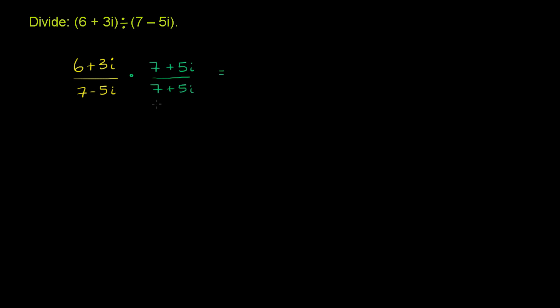So let's multiply this out. Our numerator, we just have to multiply every part of this complex number times every part of this complex number. You can think of it as FOIL if you like. We're really just doing the distributive property twice. We have 6 times 7, which is 42. And then we have 6 times 5i, which is 30i. And then we have 3i times 7, so that's plus 21i.